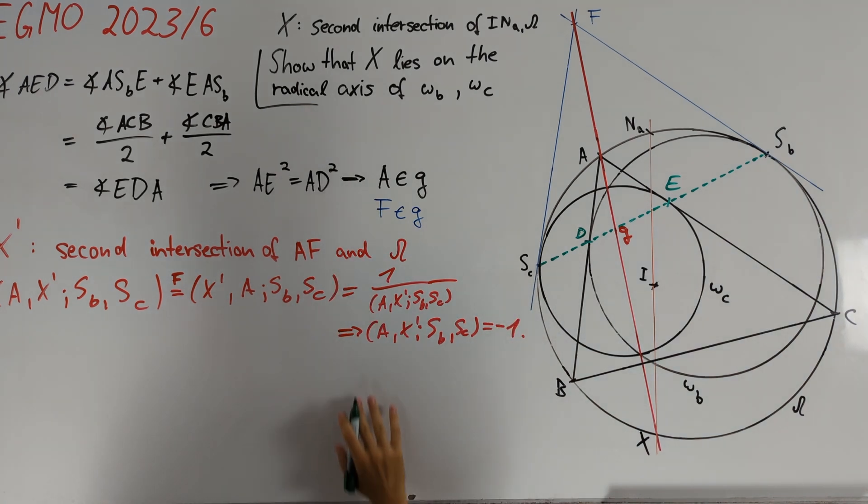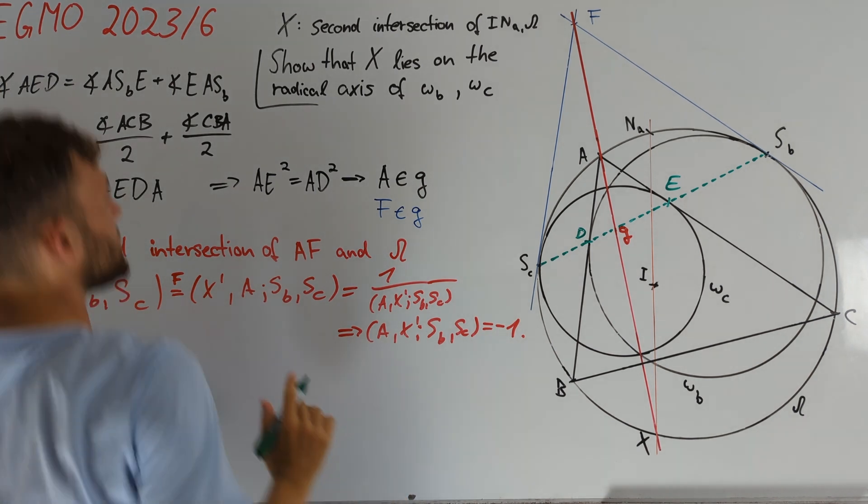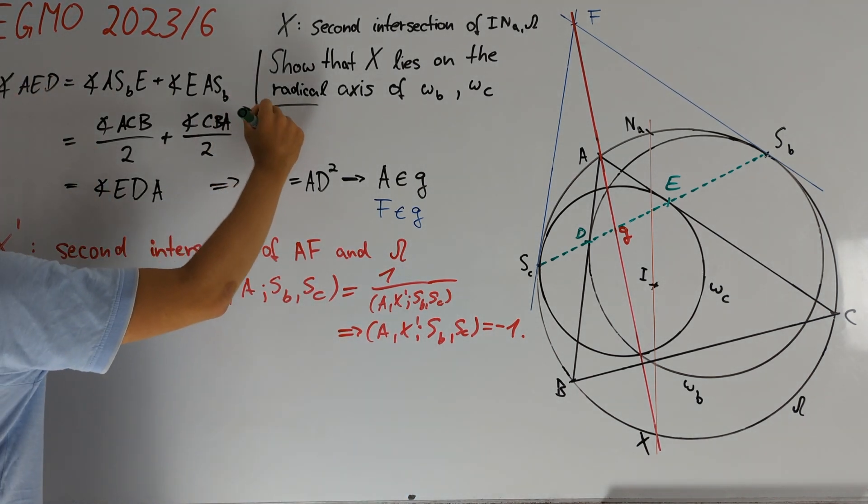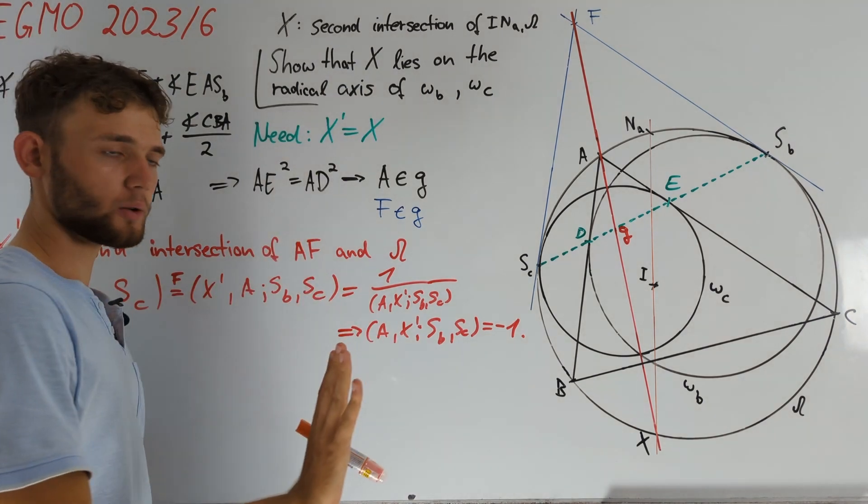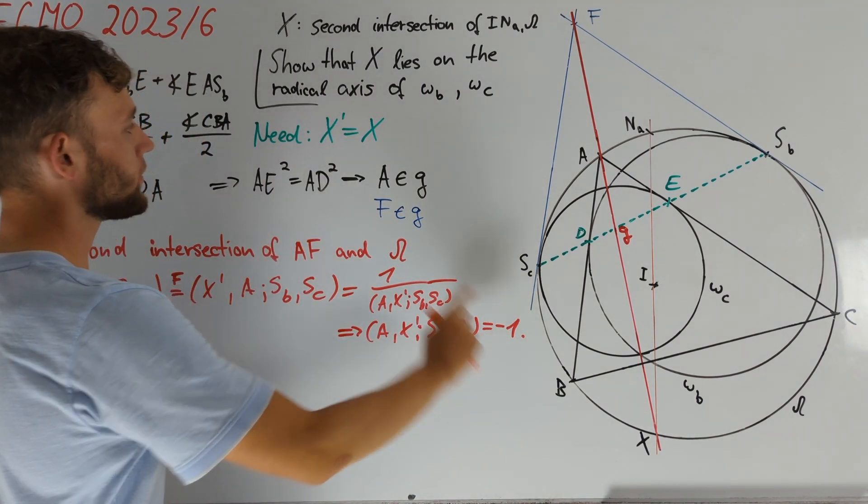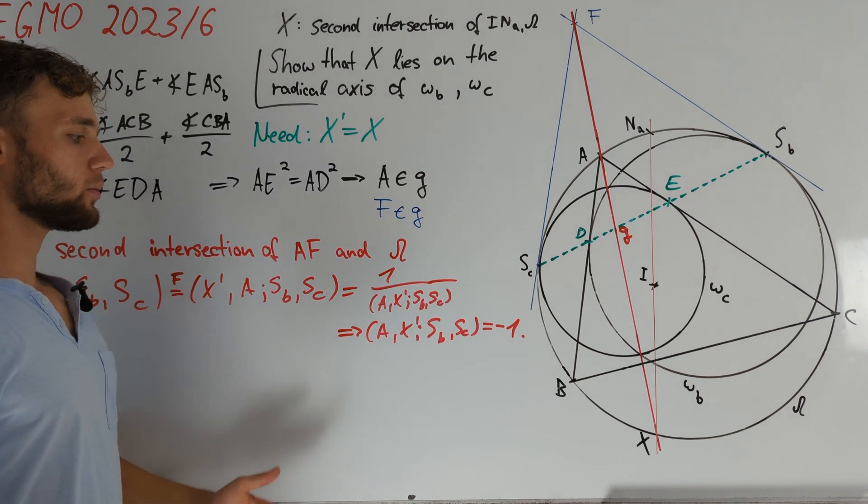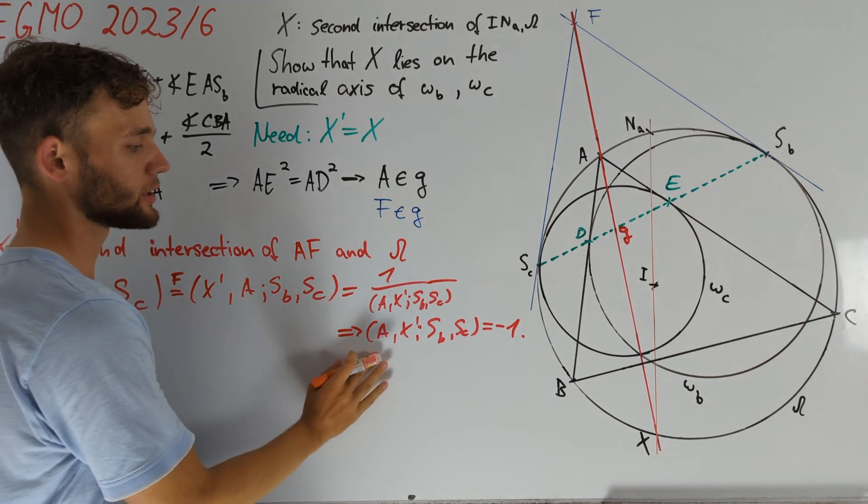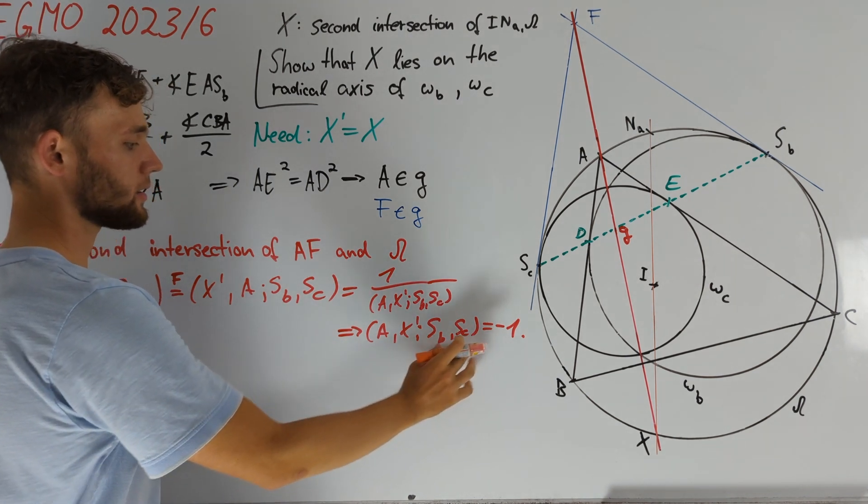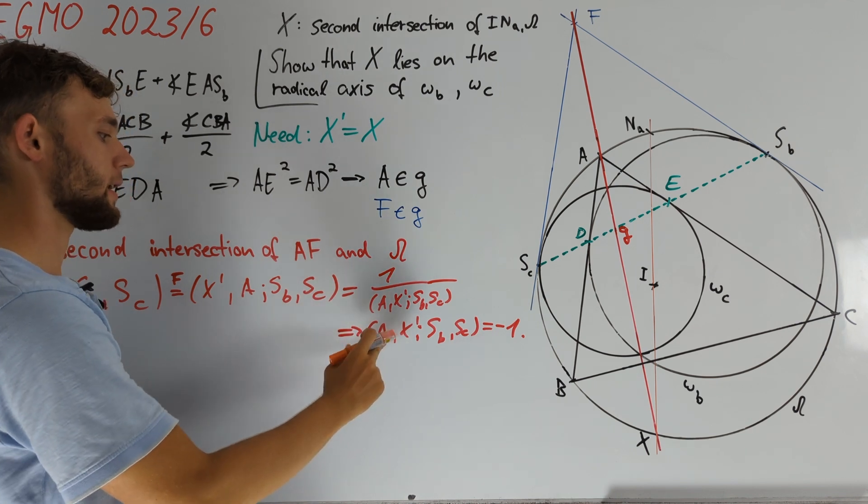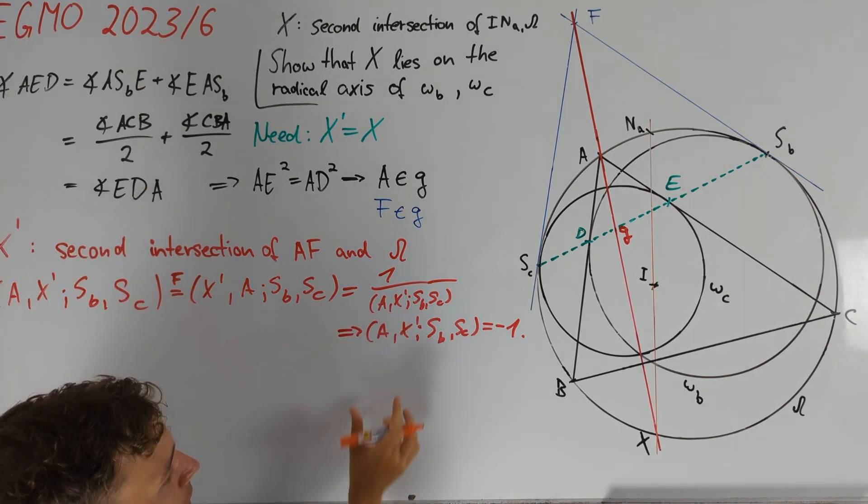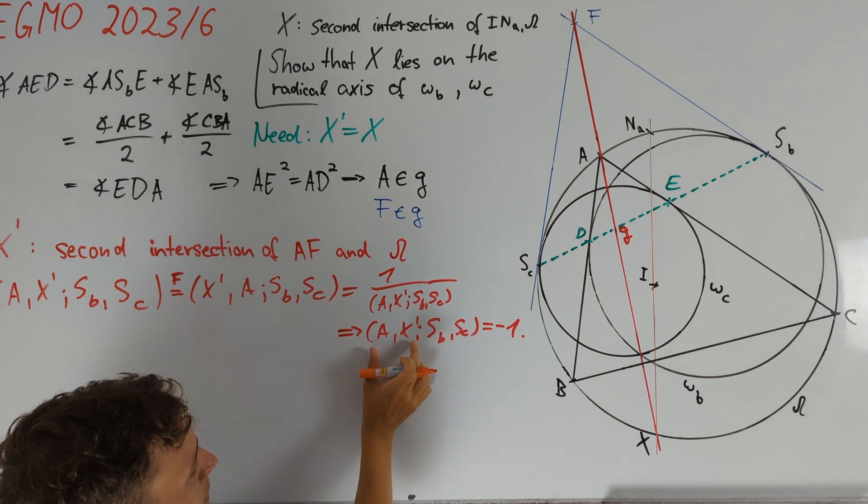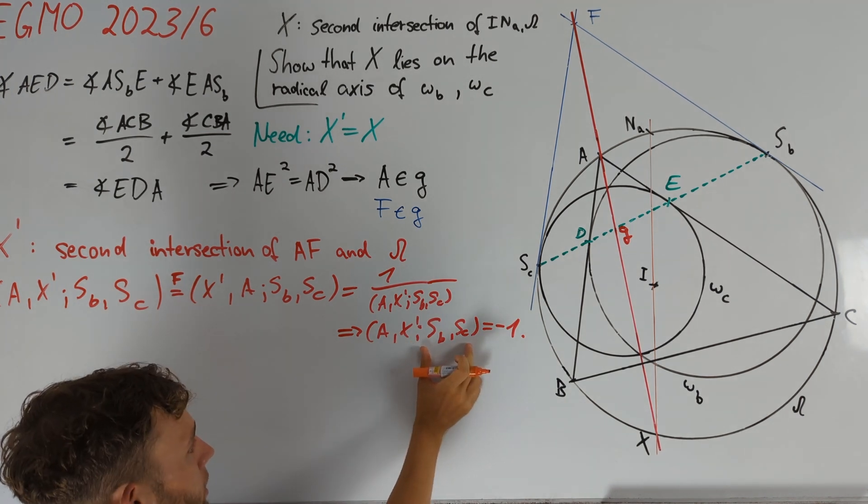To get back to our original problem, let us notice that by the way we defined X prime, we need to show that X prime is equal to X to finish our proof. We can use the following fact together with this result to prove what we need. Namely, we have that if two cross ratios are equal and three of their points are also the same, then the fourth point must also be equal. Therefore, we only need to prove that also the pairs A, X and SB, SC are harmonic.